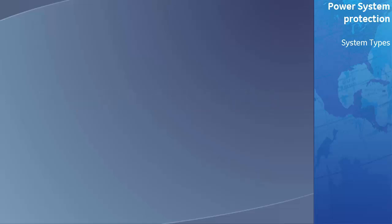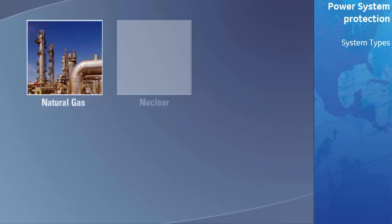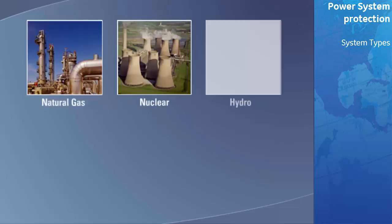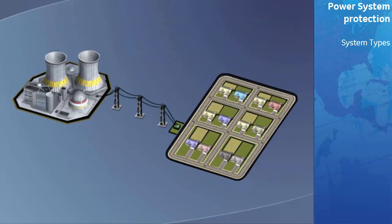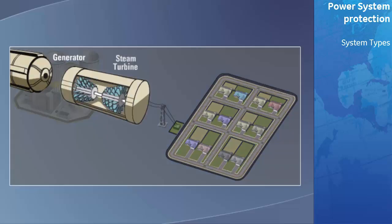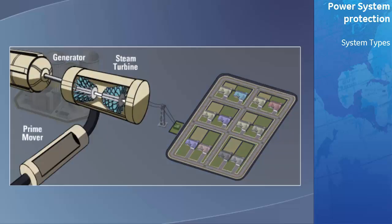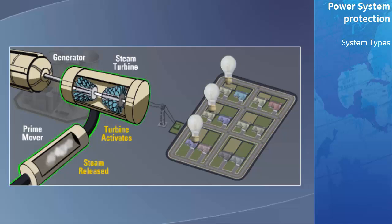There are many sources of electrical power: gas, nuclear, hydroelectric, and alternative. The electrical power that is generated by these sources must equal the power that is consumed. Let's take a look at a simple system consisting of a generator, steam turbine, prime mover and control system, and a residential load. As stated, the generated power must equal the demand, which is constantly changing.